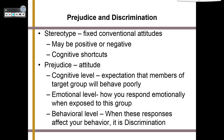The next thing we're going to talk about is prejudice and discrimination. This all starts as a stereotype, which is a fixed conventional attitude. Stereotypes can be positive or negative — things like 'all blondes are stupid,' 'white people can't jump,' 'all Asians are good at math,' 'all white people are rich' — the ideas go on and on. They are mental shortcuts in how we think about an entire group of people.